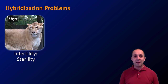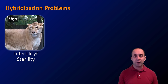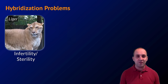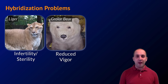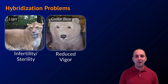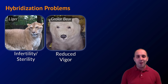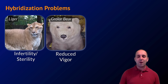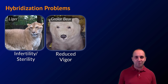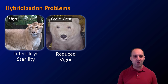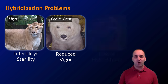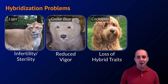A liger is the offspring of a lion and a tiger, and they are infertile or sterile — I could have just as easily used a mule, the offspring of a horse and donkey, which is very similar. This is a growler bear, a grizzly–polar bear hybrid. Because it has reduced vigor — meaning it's not well adapted for its environment — it doesn't survive to reproduce, even if it could.